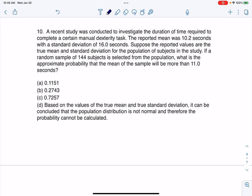A recent study was conducted to investigate the duration of time required to complete a certain manual dexterity task. So right out the gate, I have a feeling my variable is going to be time. The reported mean, and I'm going to highlight that word, was 10.2 seconds. So I do see a time value - I've got a numerical variable with units. The reported mean was 10.2 seconds with a standard deviation of 16 seconds. So I just want to take a moment here and say that my variable is this time required to complete dexterity task.